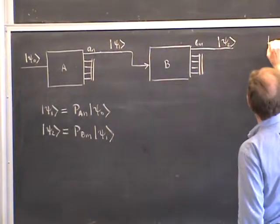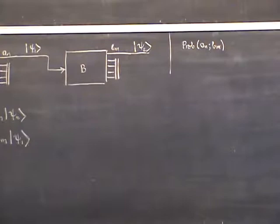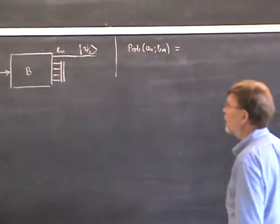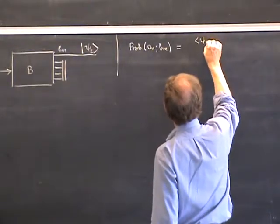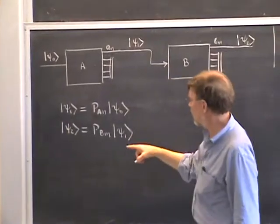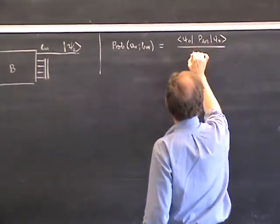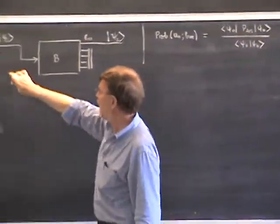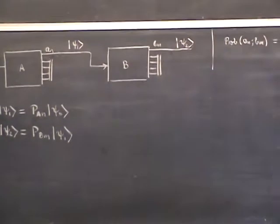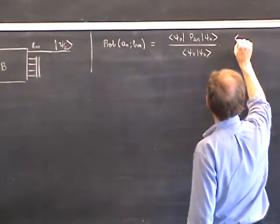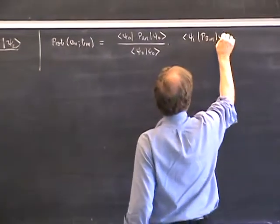Now let's ask for the probability of measuring A_n first and then B sub m in a sequence of measurements. This is a compound probability: you multiply the probability of measuring A_n in the first place, given by sandwiching the initial state psi zero around the projection operator P_An divided by the norm squared of psi zero, by the conditional probability of getting B sub m given that we had A_n, given by sandwiching psi 1 around the projector P_Bm divided by the norm of psi 1.